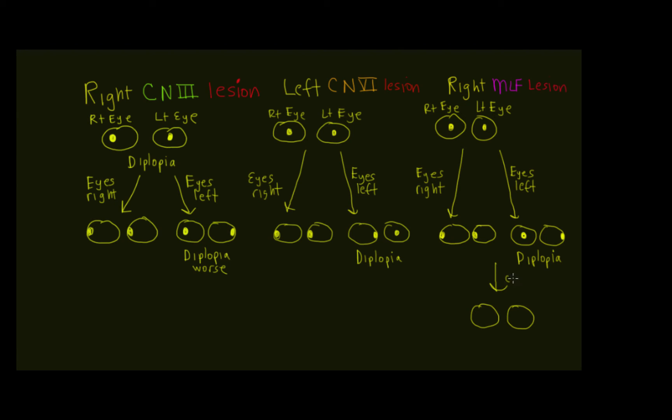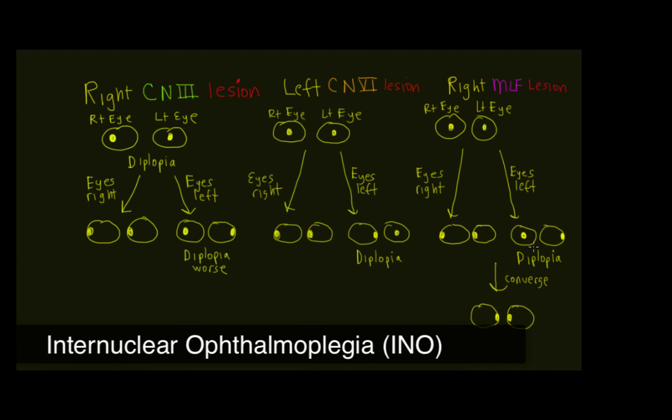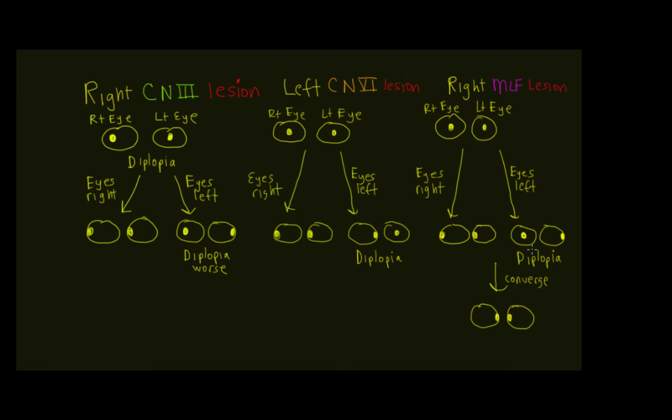Now, if we ask them to actually converge their eyes, they'll be able to do that, because there's nothing wrong with the medial rectus or the right three. It's a communication between them. And actually, when you have a lesion in the MLF this way, it's called an internuclear ophthalmoplegia, a problem with the communication between the abducens nucleus and the contralateral oculomotor nucleus.